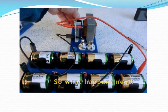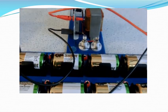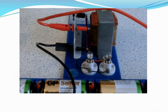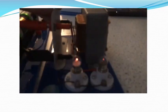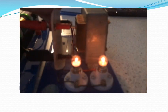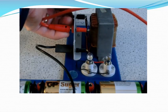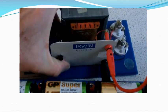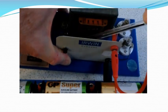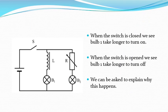I'm going to turn this around so you can see it more easily and zoom in a little bit. So, press the switch. If you look carefully, one bulb lights just before the other, and the bulb that lights first is the one connected to the resistor. This was the circuit we had, and we can see that the one connected to the resistor lights slightly before the one connected to the inductor. We can be asked to explain why this happens.